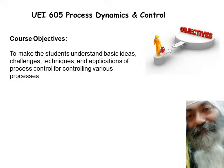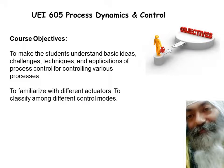Every process — most of them — involves some kind of chemical process that needs to be controlled. In order to control it, you must know the behavior of the process, or the dynamics of the process — how it is going to behave with respect to time under different conditions. The objective is also to familiarize the students with different actuators and to classify amongst different control modes. These are the basic objectives of this course.